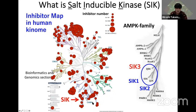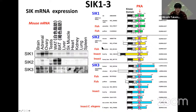The AMPK family makes a subfamily with SIK1, SIK2, and SIK3. This is a human kinase tree. SIK3 may be the evolutionary origin — it is found in C. elegans, insects, fish, and mammals. SIK2 is also found in insects and vertebrates. SIK1 is only in vertebrates.